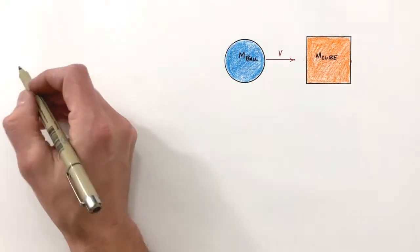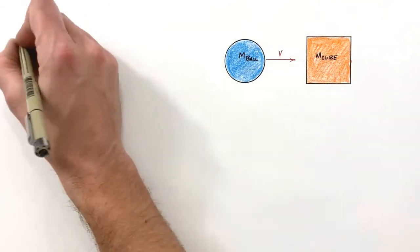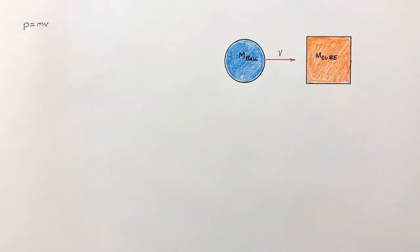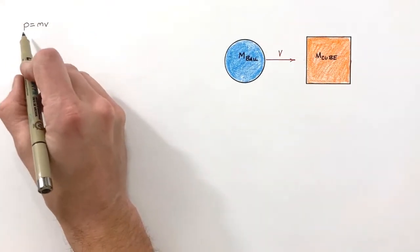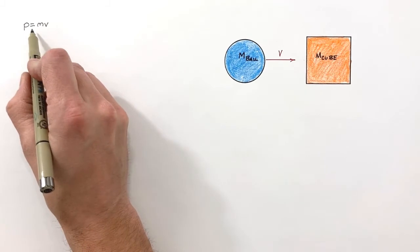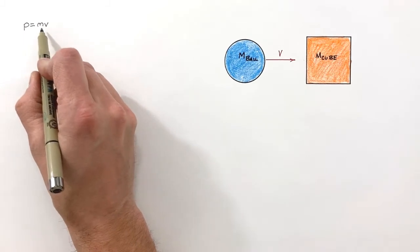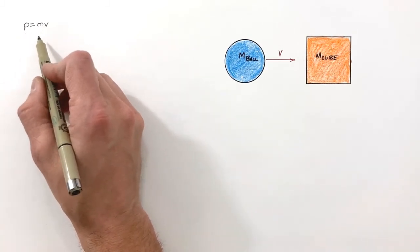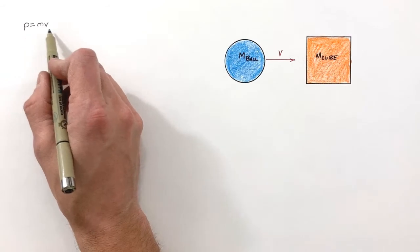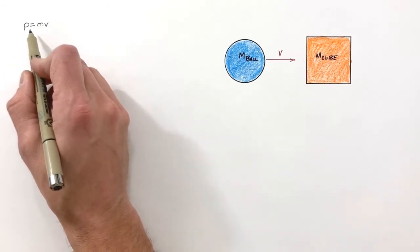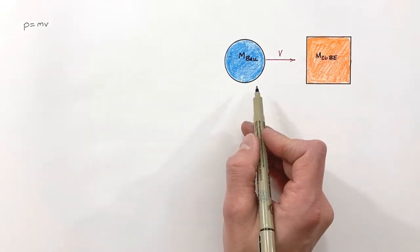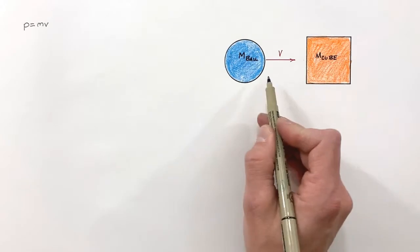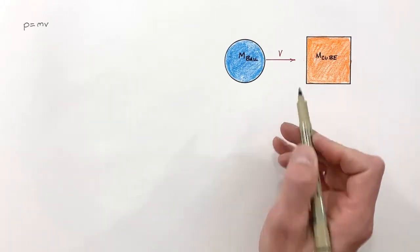In order to understand collisions, first we need to talk about momentum. We know momentum, P, is equal to mass times velocity — that's how it's described. And this is actually central to our understanding of collisions and calculating the outcome in any particular collision.